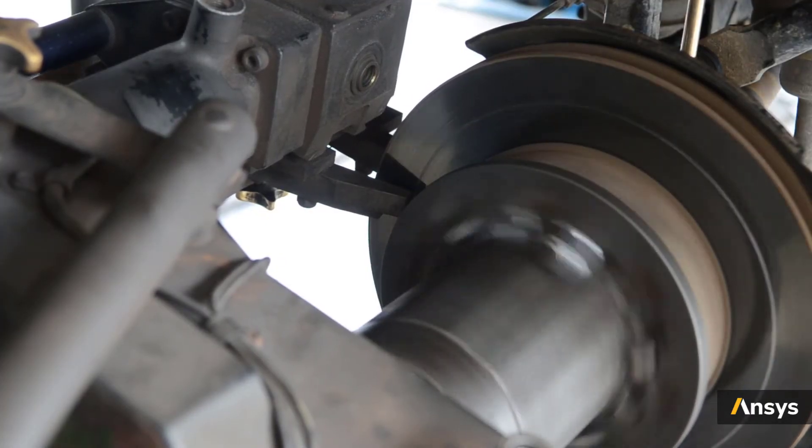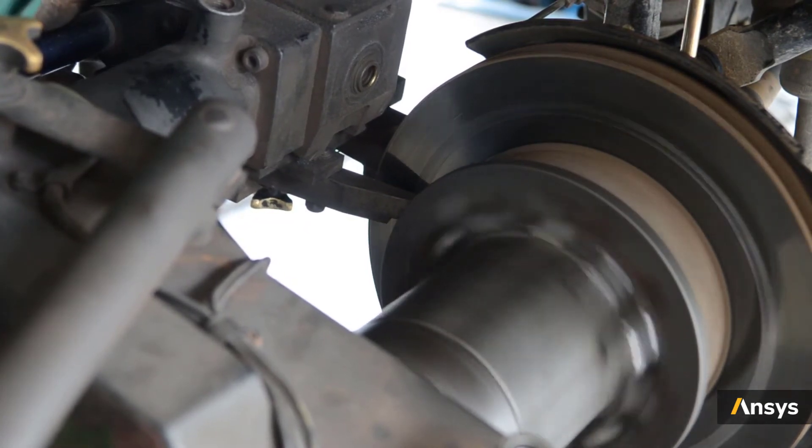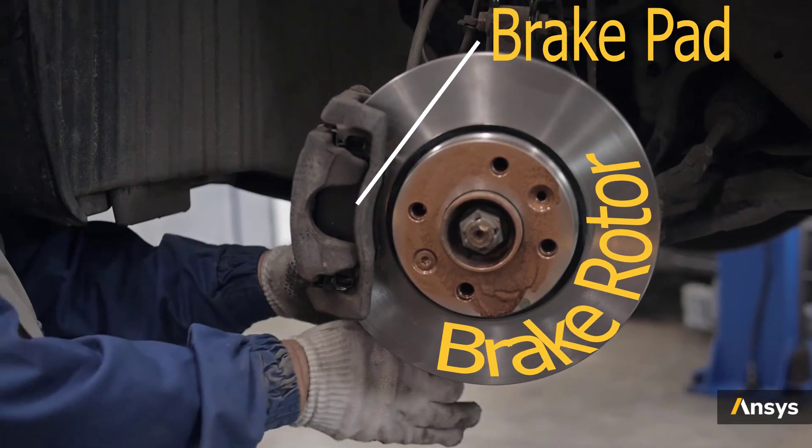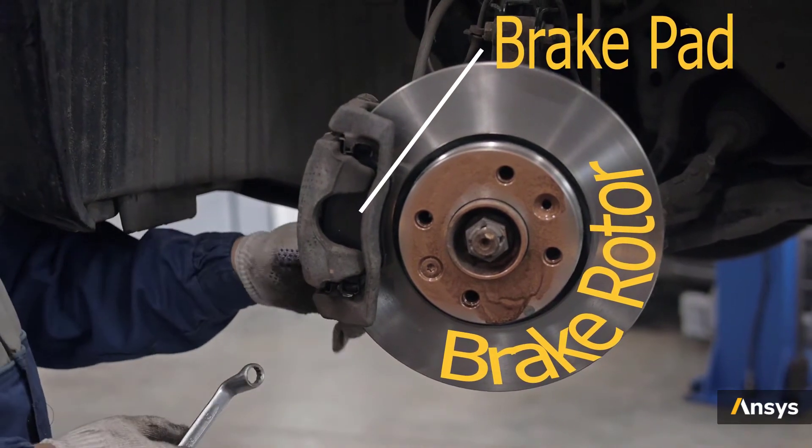It's a form of dynamic instability induced due to variational frictional force between the brake pads and the rotor. Such variational friction can be introduced due to loosely connected components or due to wrongly chosen geometric and material properties.